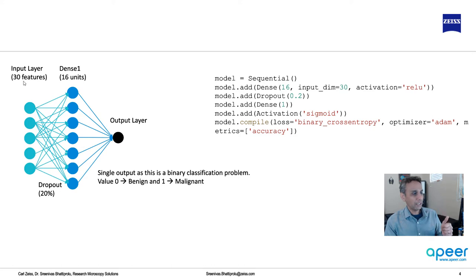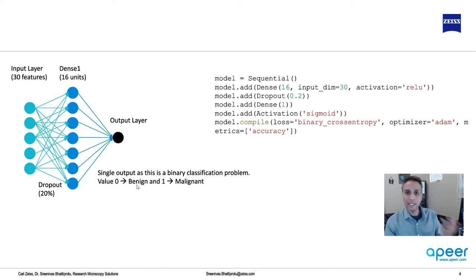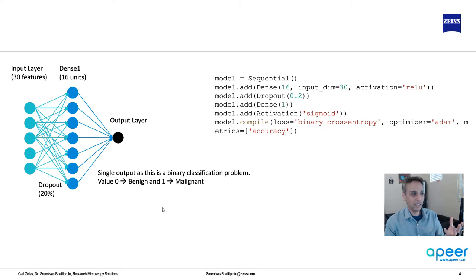So what are we going to do? Define our input, define our hidden layer, and define our output layer with only one output. Why one output? We have benign and malignant — two things to predict — but one output is actually enough. If the value of that one output is zero, it's benign; if the output is one, it's malignant. So you just need one output for binary classification.